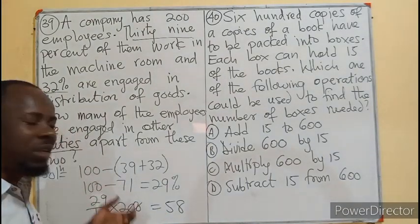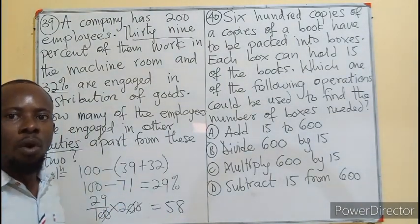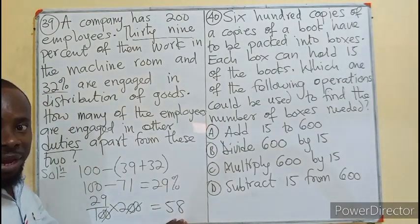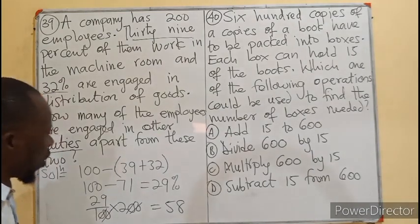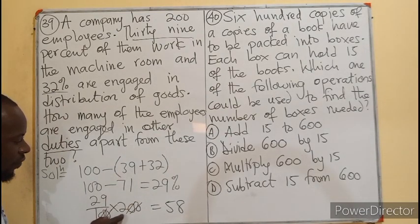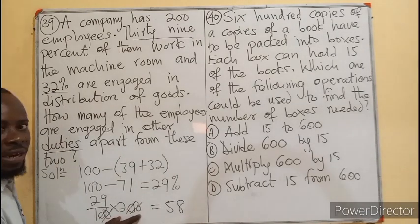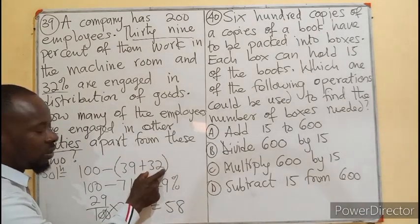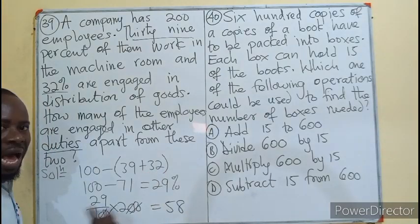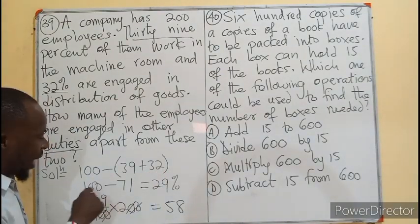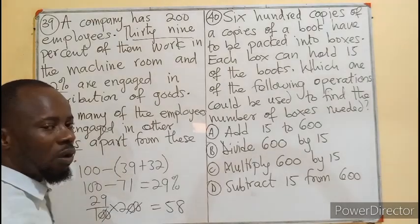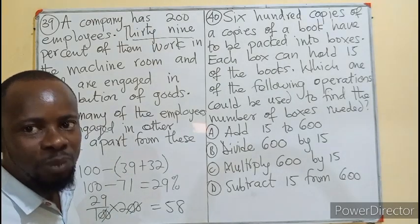That's one way to get the answer. You can also find 39 percent of 200, find 32 percent of 200, add the two results together, and subtract from 200. You will still get 58 employees working in that company.